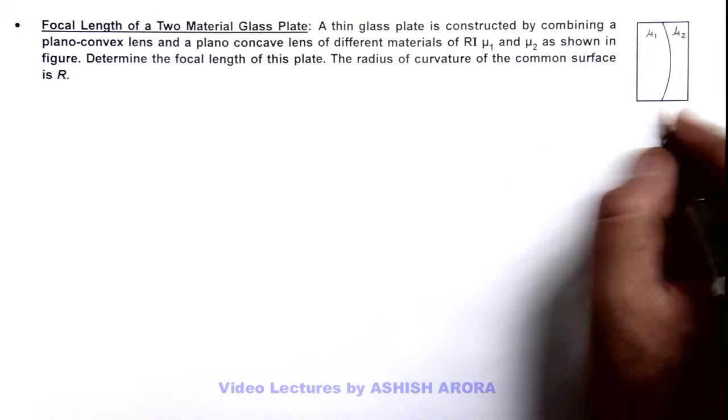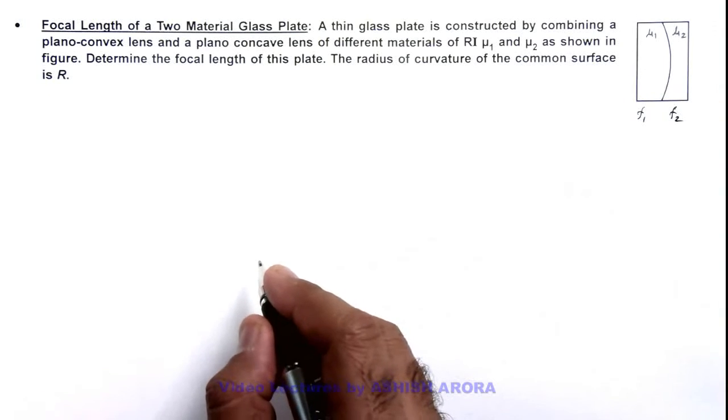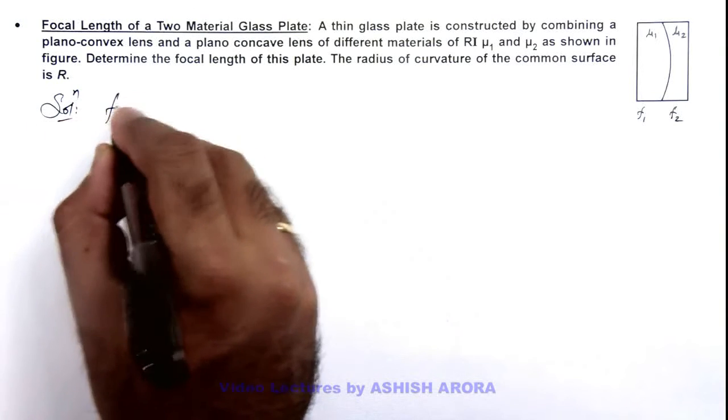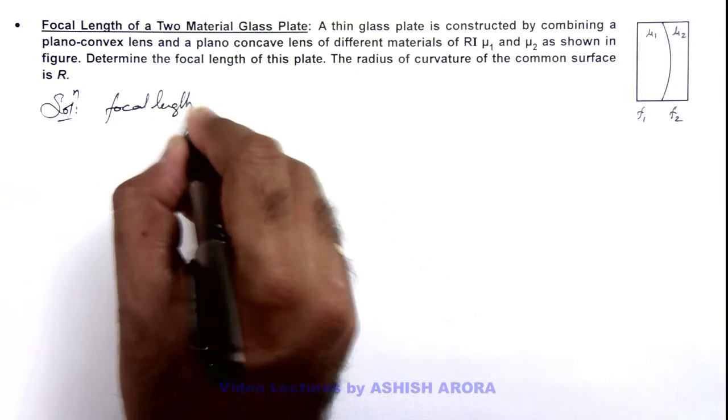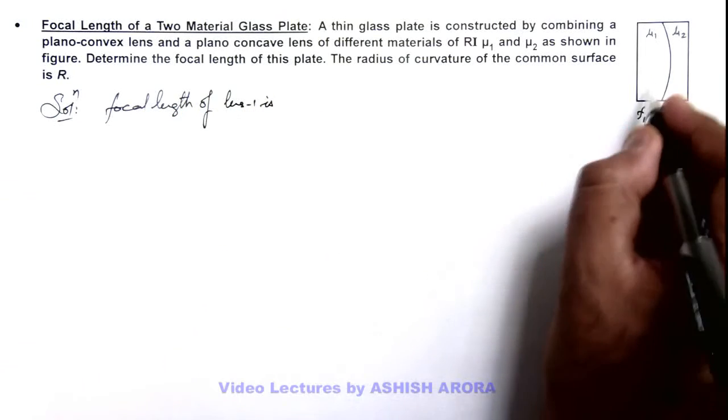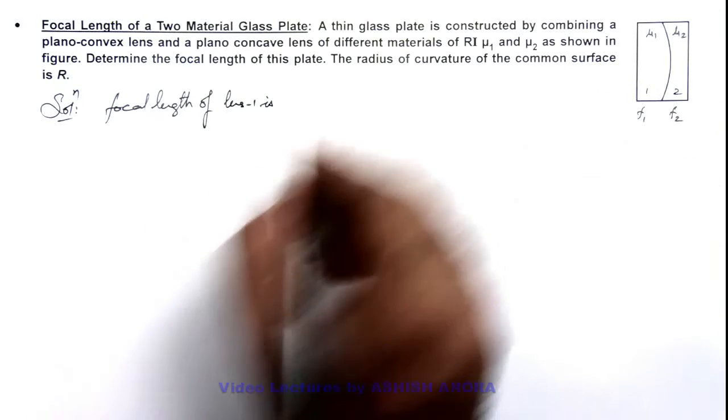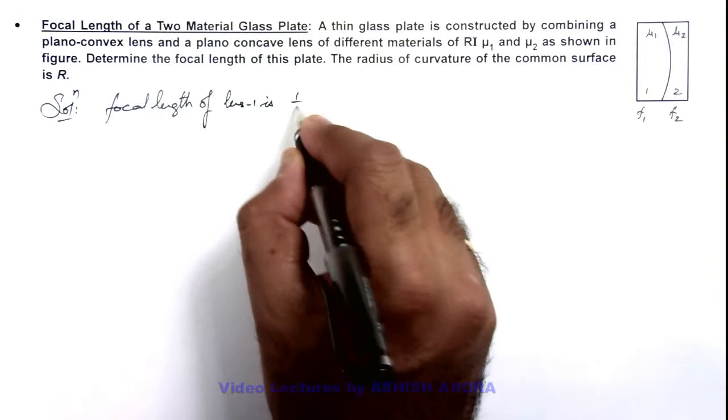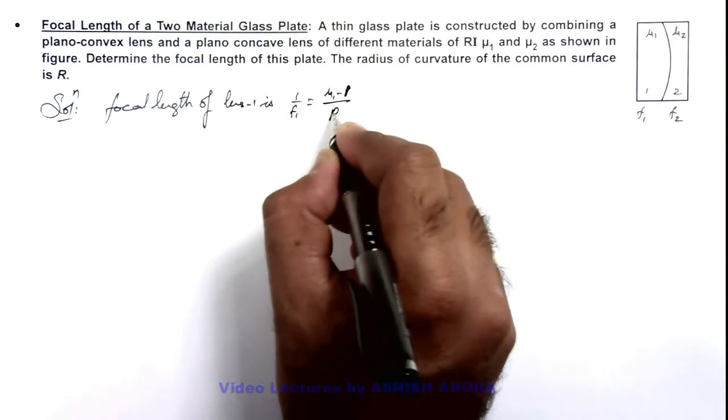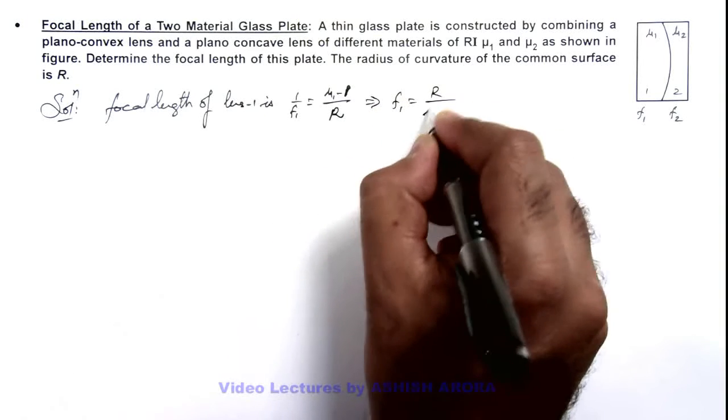So here, if we consider these two as separate lenses of focal lengths f1 and f2, we can write in solution: the focal length of lens 1, I am taking the first lens with the refractive index mu 1. This can be written as 1 by f1 is equal to mu 1 minus 1 by r, so the value of focal length is given as r by mu 1 minus 1.